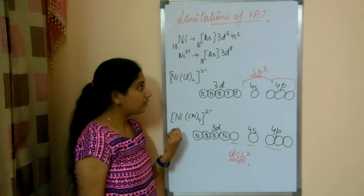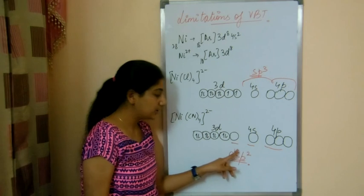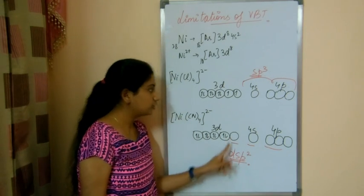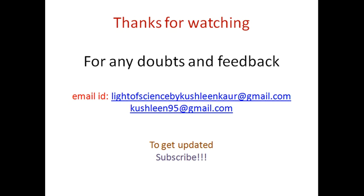This is the main drawback of valence bond theory: whether inner d orbitals are going to be used in hybridization or not. Valence bond theory could not explain this.